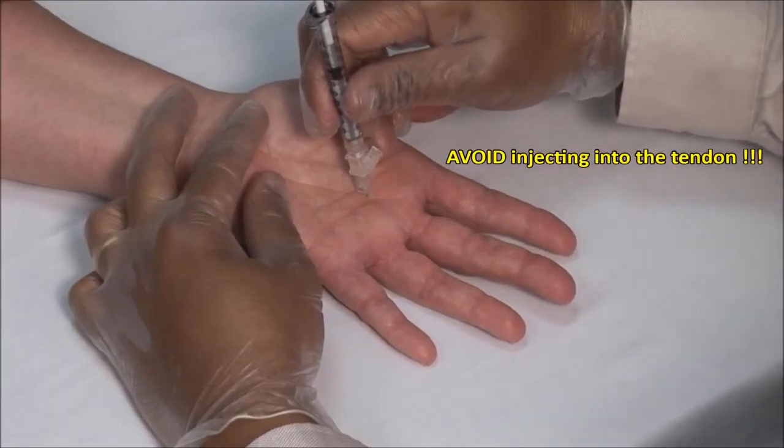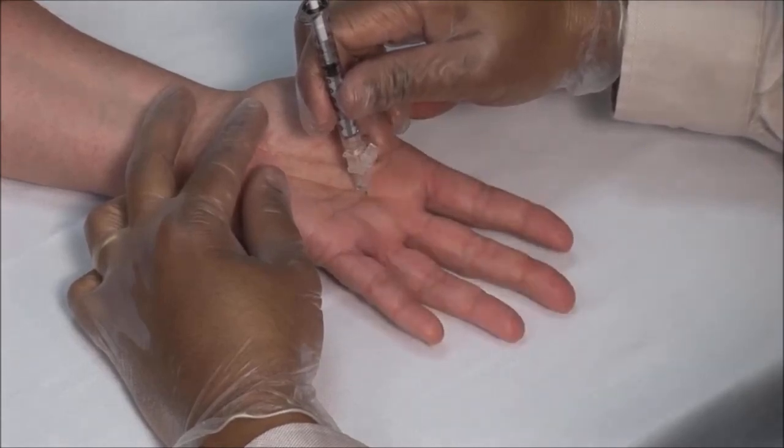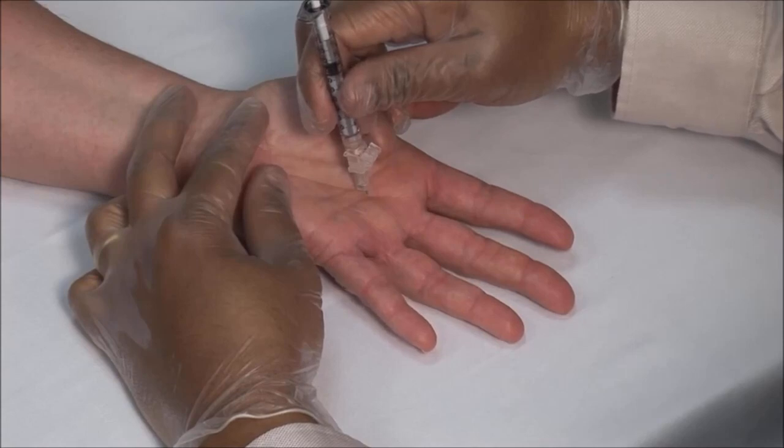You can ask the patient to flex and extend the finger. If the syringe moves then the needle is within the tendon and it should be withdrawn a little and repositioned.